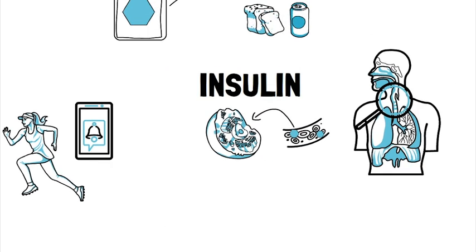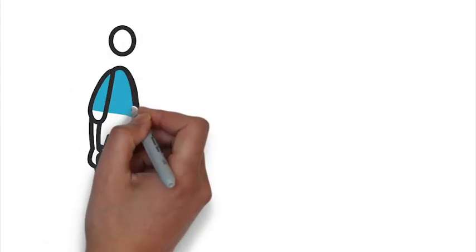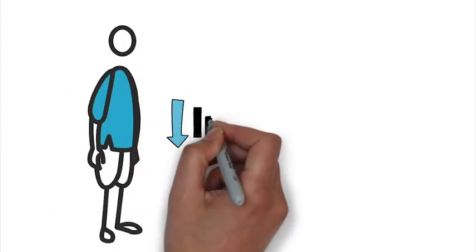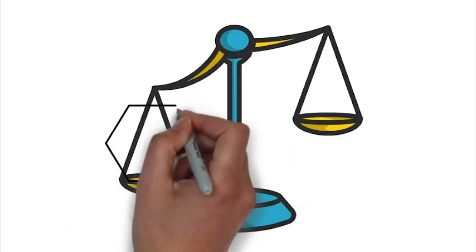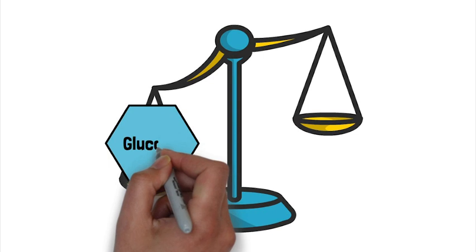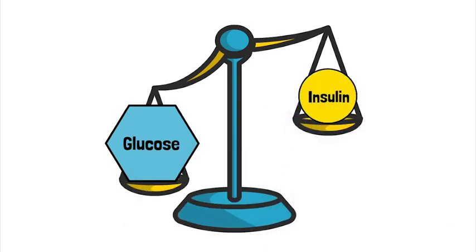When you have diabetes, this process doesn't happen normally. The insulin produced by the body is either ineffective against the high quantity of glucose or no insulin is produced at all. The high levels of glucose within the blood as a result of inadequate levels of insulin is what leads to the symptoms of diabetes.